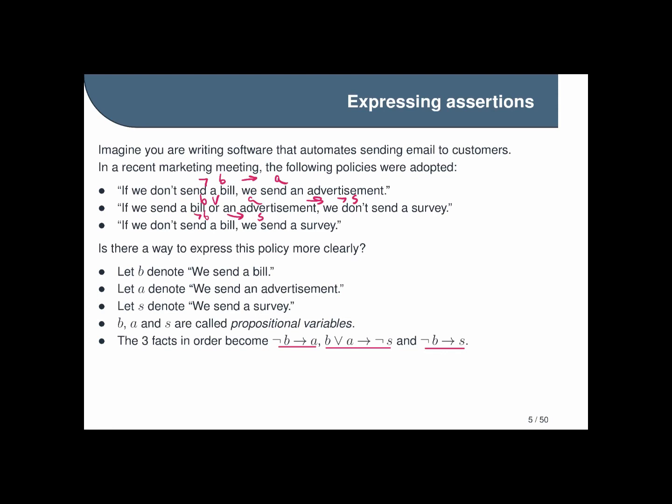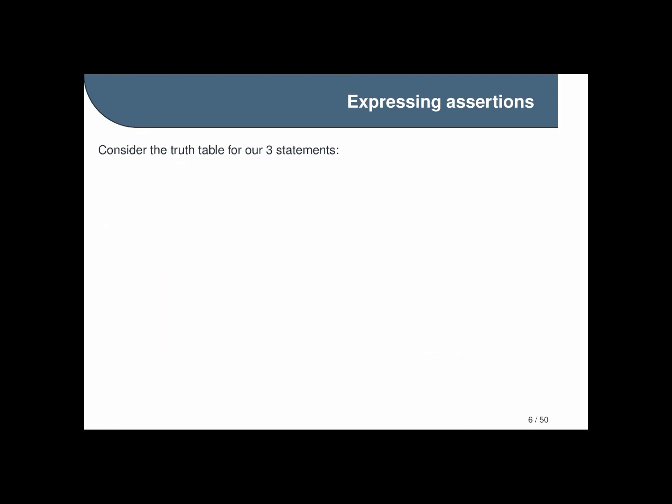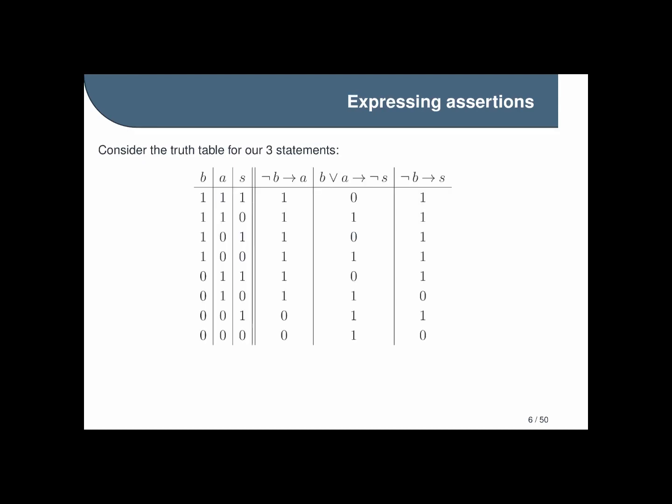Now one thing we can do since there are not too many variables is just write out the truth table for these statements to see what's going on. So if we do that, what we see is that there are actually not too many ways of making all the statements true at once. In fact we have just two options, our second row and our fourth row. These are the two rows where we have ones or true for all of our statements after we write out all the possibilities.